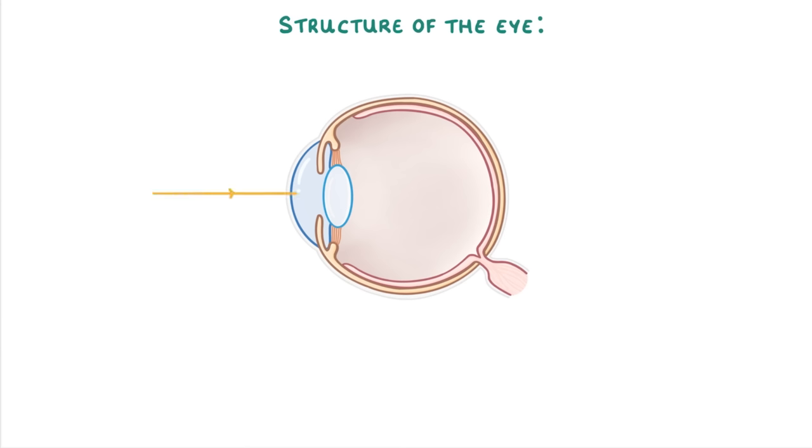As light hits the eye, the first structure that it meets is the cornea. And to allow all the light to pass through, the cornea is completely transparent and so has no blood vessels.